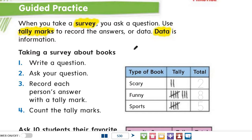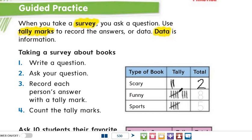When you take a survey, you ask a question and use tally marks to record the answers, or data — and data is information. Let's try another one: taking a survey about books. Write a question like 'What's your favorite type of book?' then ask people and record each person's answer with a tally mark. We have three types: scary, funny, and sports. There are only two persons who like scary books — one and two — total is two.